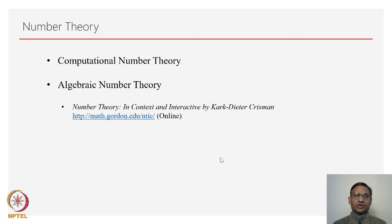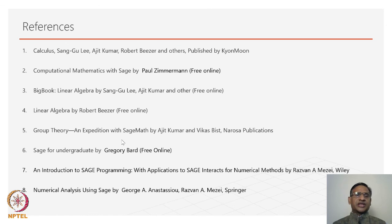For example, you can look at a few references. There is a book on number theory in context and interactive by Chris Mann, and this has several SageMath modules. This is again freely available. You can also look at algebraic number theory, a short book, a computational approach by William Stein. Many people actually use SageMath for their research in number theory. These are some of the references which could be useful.